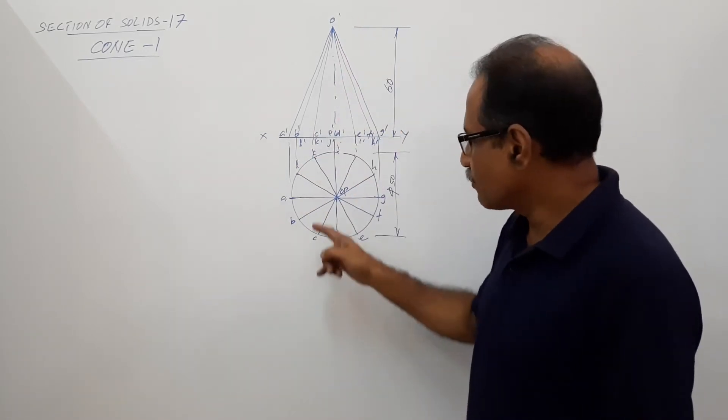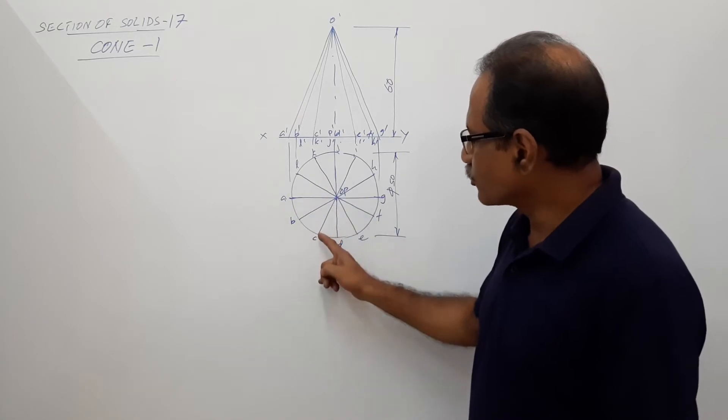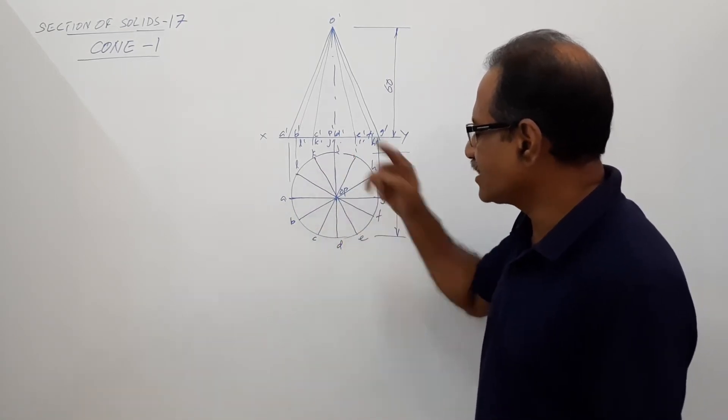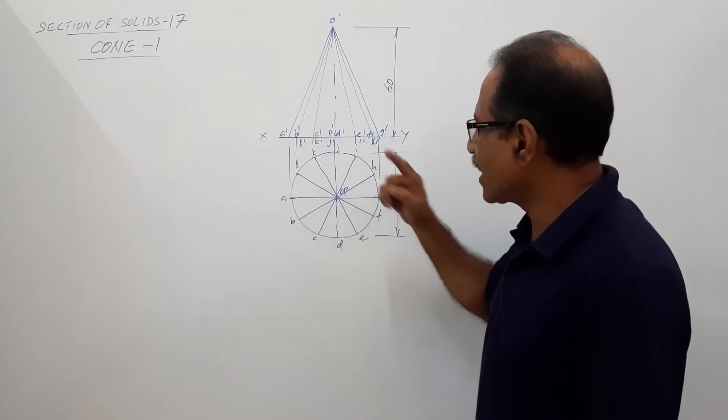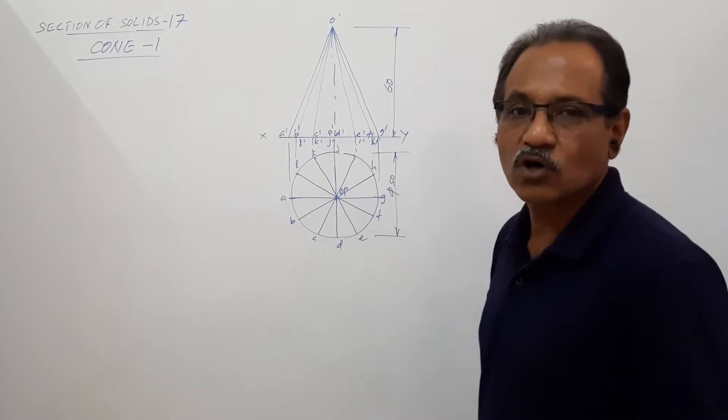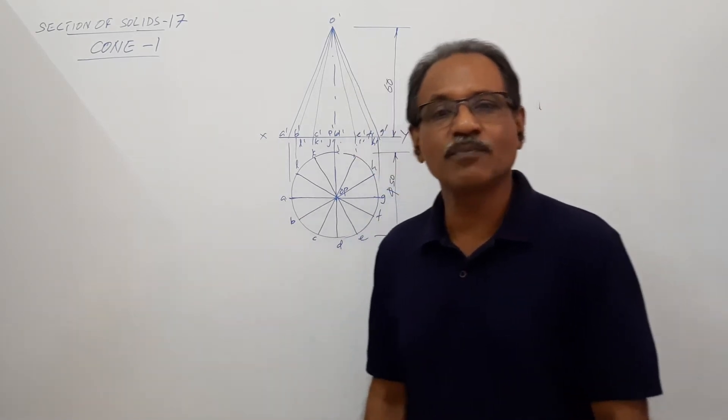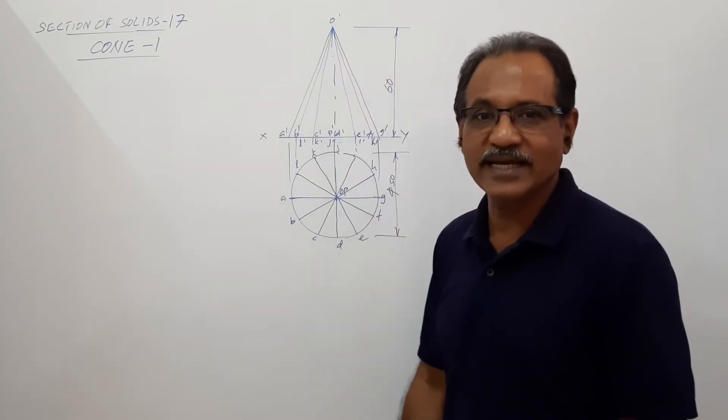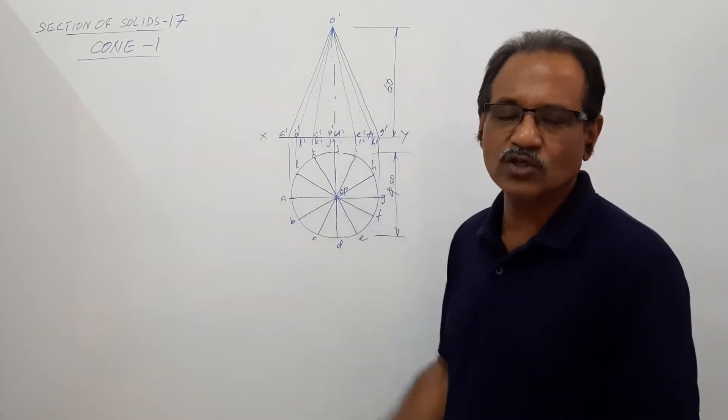In elevation also, a projector through B will pass through here. A projector through C will pass through K. A projector through D will pass through J, through E will pass through I, through F will pass through H, and then G. All the 12 generators are marked in the plan and elevation. The center line I have drawn as the chain line, can be a form line also to represent the axis.